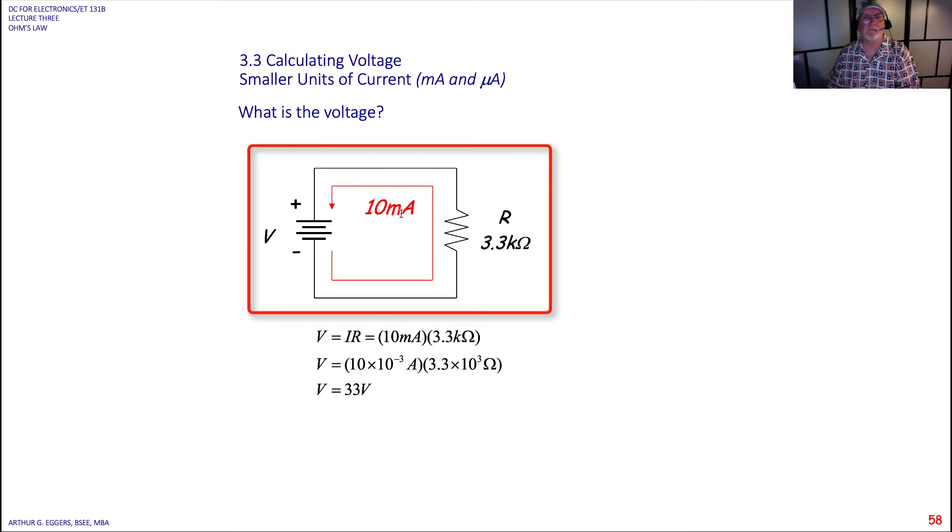What's the voltage here? 10 milliamps being pumped through a 3.3 k ohm resistor, 33 volts.